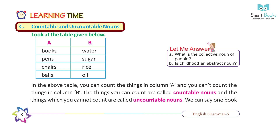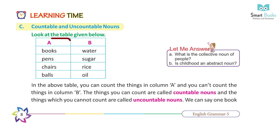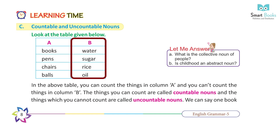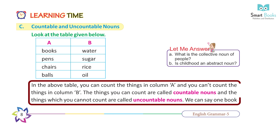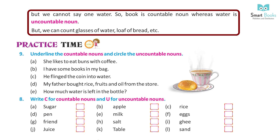Learning time C: Countable nouns and uncountable nouns. Look at the table given below. Column A: books, pens, chairs, balls. Column B: water, sugar, rice, oil. You can count the things in column A, and you cannot count the things in column B. The things you can count are called countable nouns, and the things which you cannot count are called uncountable nouns. We can say 'one book' but we cannot say 'one water.' So book is a countable noun whereas water is an uncountable noun. However, we can count glasses of water, loaves of bread, etc.